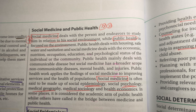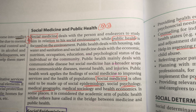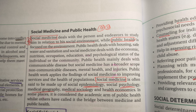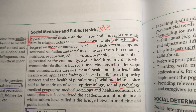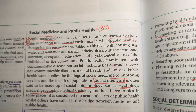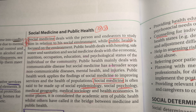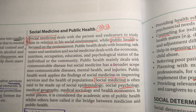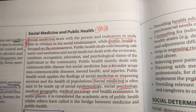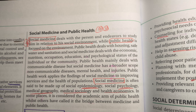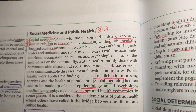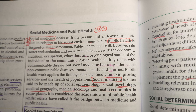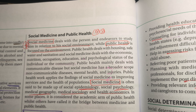nutrition, occupation, education, and psychological status of the individual or the community. Public health mainly deals with communicable diseases, but social medicine has a broader scope to include non-communicable diseases, mental health and injuries.